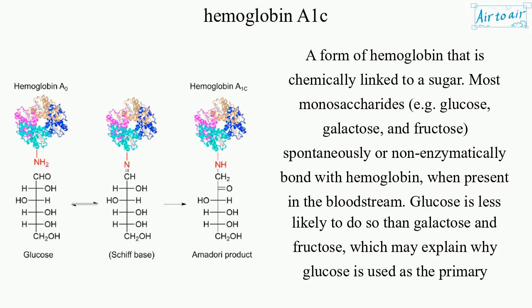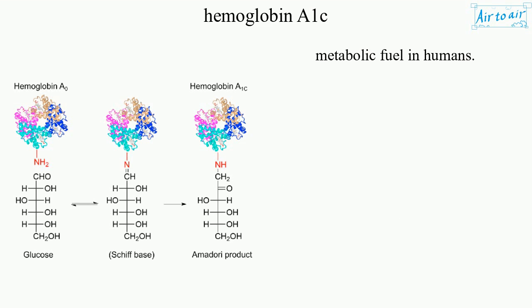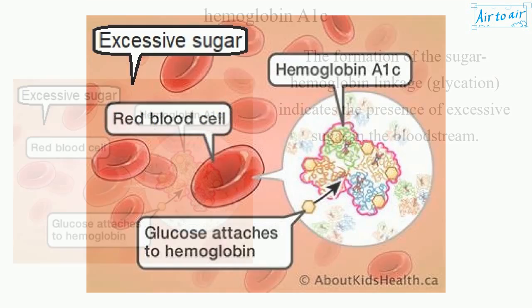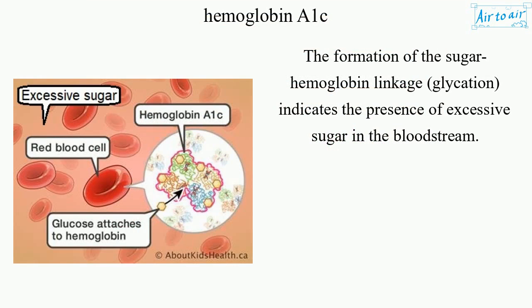Glucose is less likely to do so than galactose and fructose, which may explain why glucose is used as the primary metabolic fuel in humans. The formation of the sugar-hemoglobin linkage, glycation, indicates the presence of excessive sugar in the bloodstream.